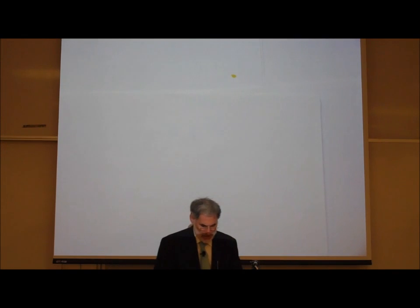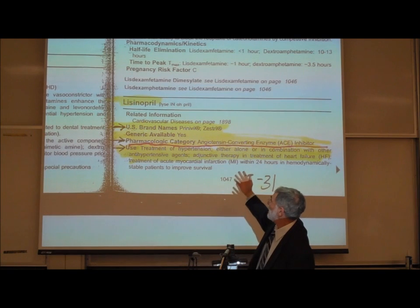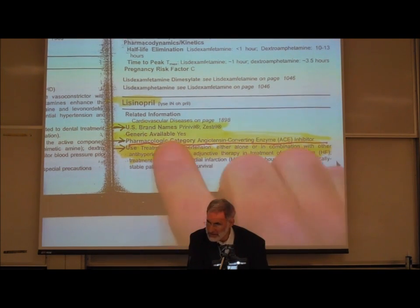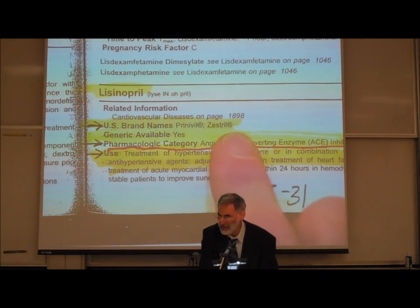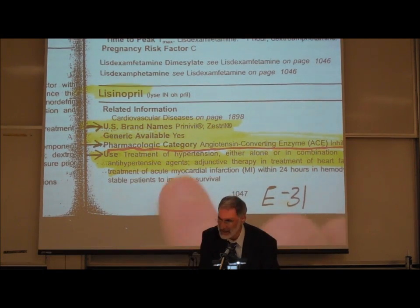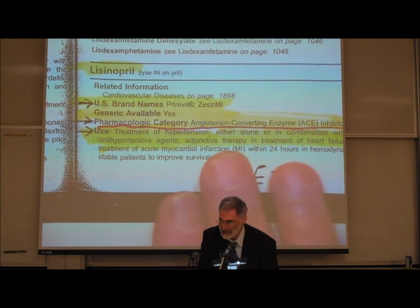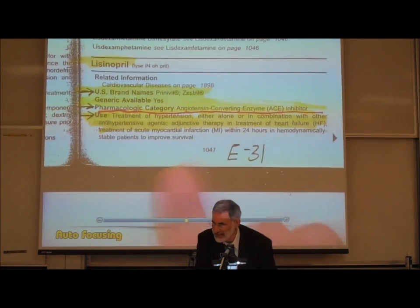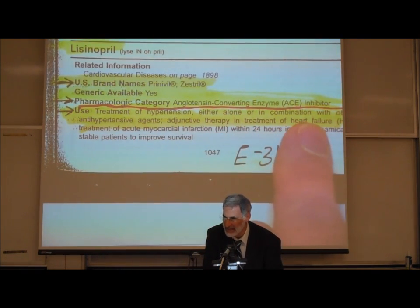On E31, from your Lexicom book, Lisinopril goes under the brand names Prinivil and Zestril. If you see drugs ending in '-pril,' it's an ACE inhibitor. There is a generic available, like CVS brand Lisinopril. Its pharmacologic category is angiotensin converting enzyme inhibitor — an ACE inhibitor.